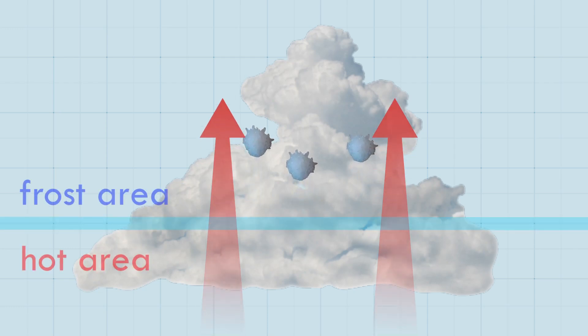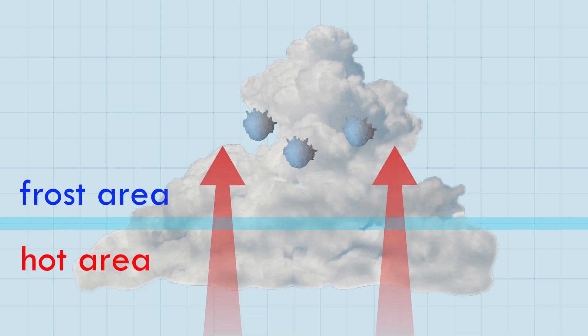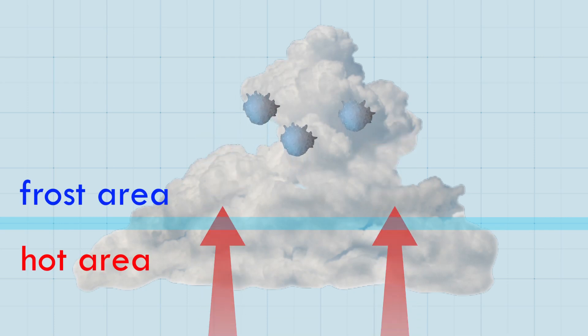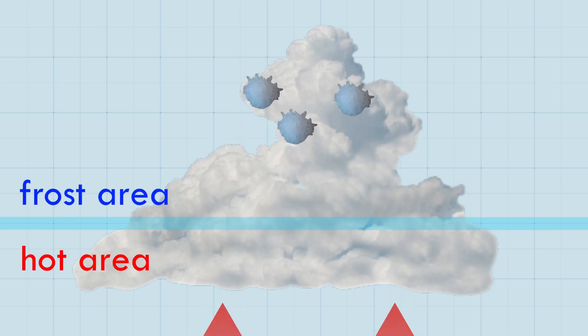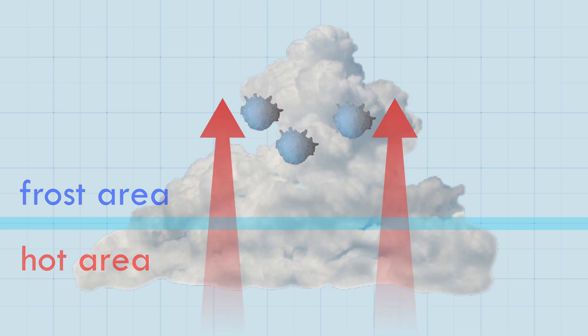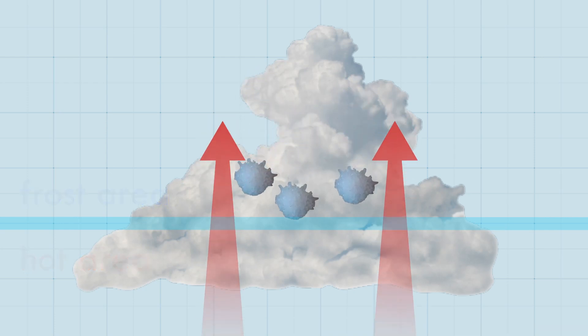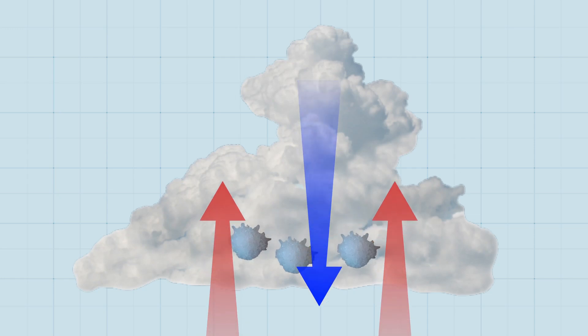Very sharp upward currents cause the upward movement of hail. However, as soon as the hail reaches heavier weight, it falls down.